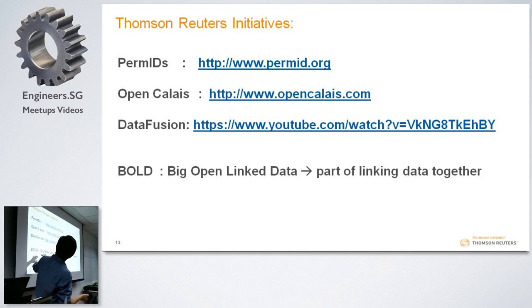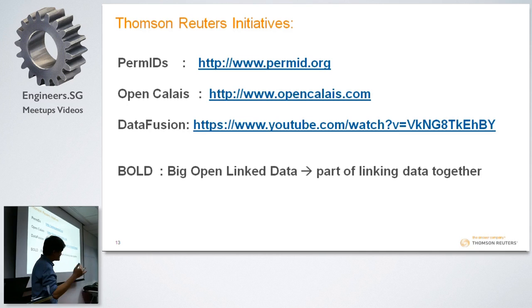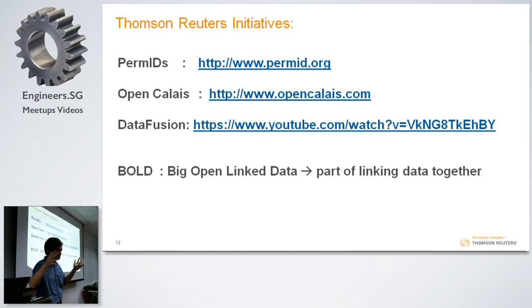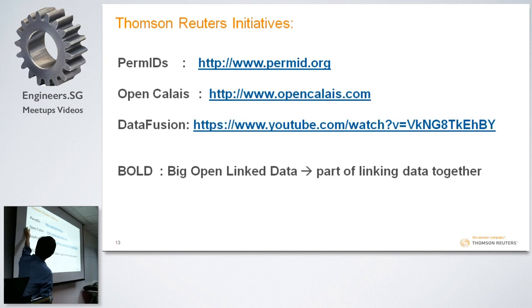We at Thomson Reuters do research on BOW, which stands for Big Open Link Data. We try to segmentize and break down data into a very granular level into RDF formats, so that we can get more information than just looking at a whole document and classifying its topic. We have three initiatives: PERMID, OpenCALI, and Data Fusion.